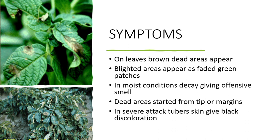The blighted areas appear as faded green patches. In moist conditions, decay gives an offensive smell. Dead areas start from the tip or margins of the leaves. In severe attack, the tuber skin gives black discoloration. These are the typical symptoms of late blight of potato.